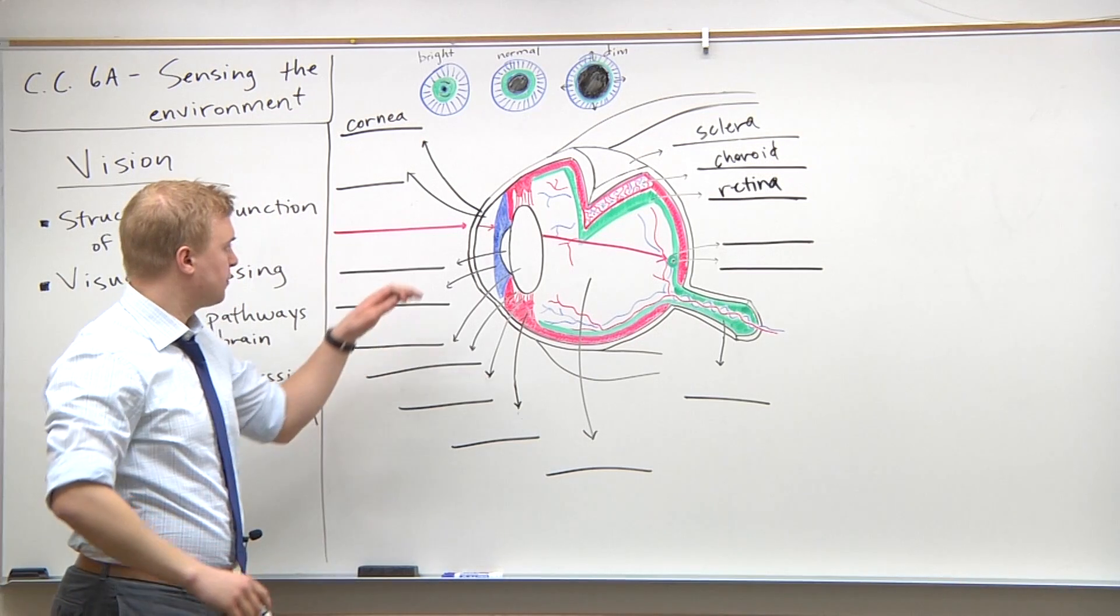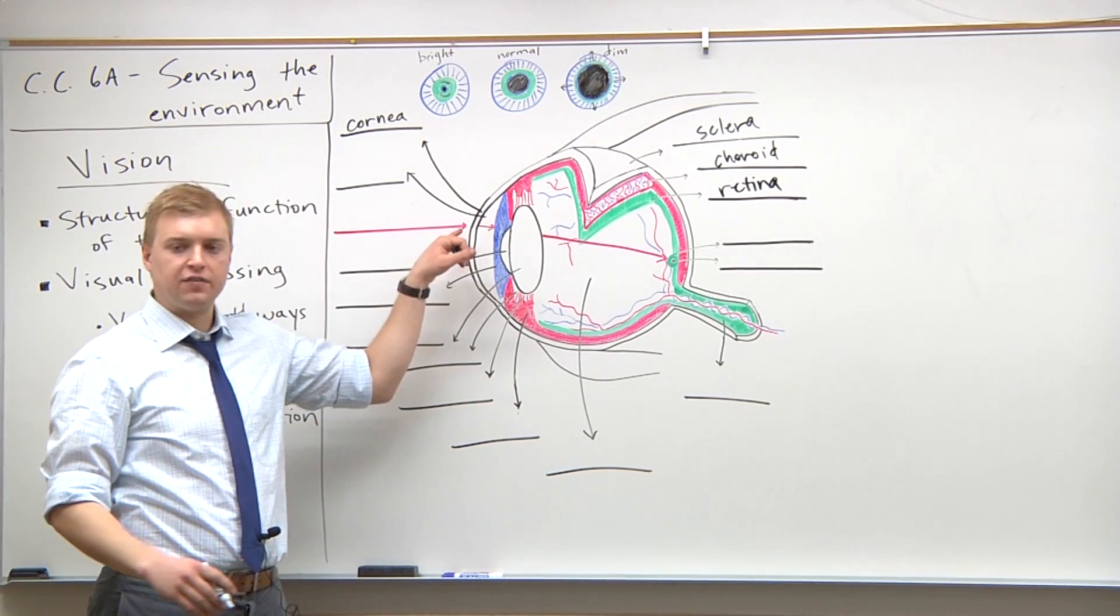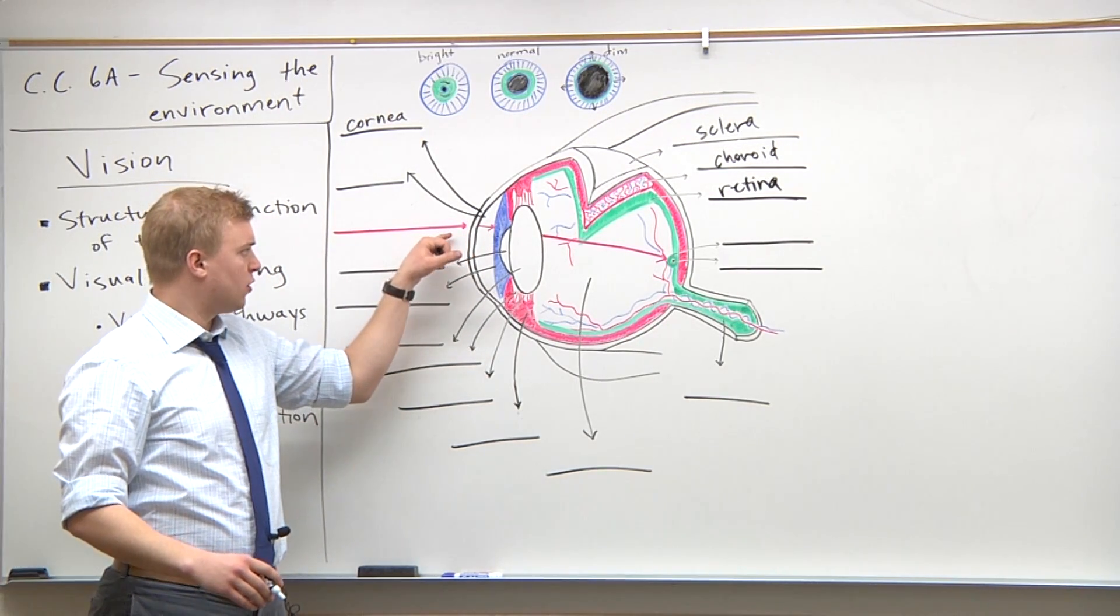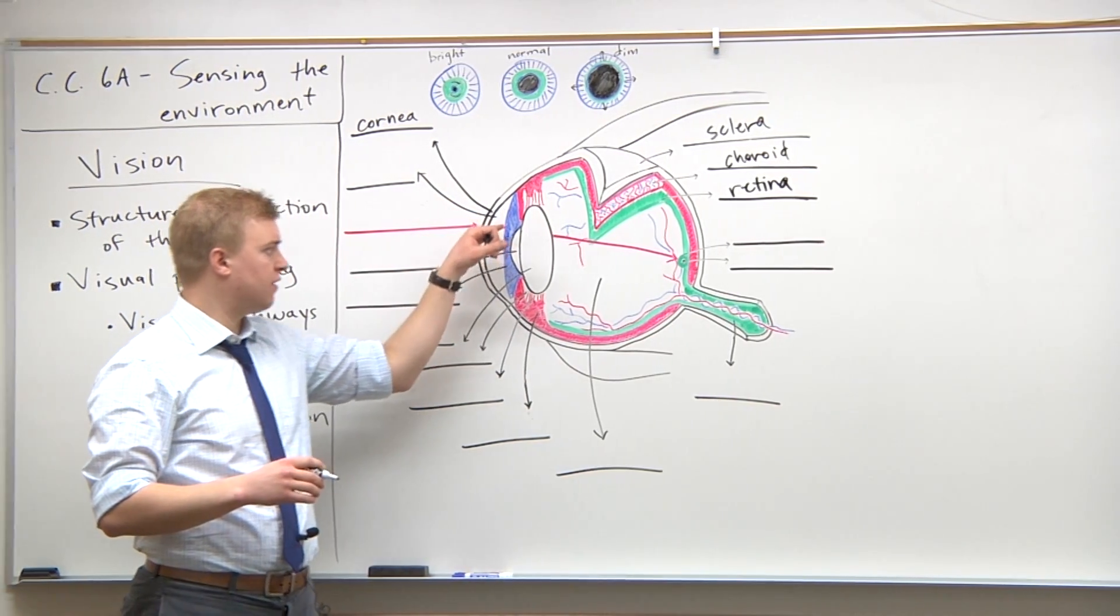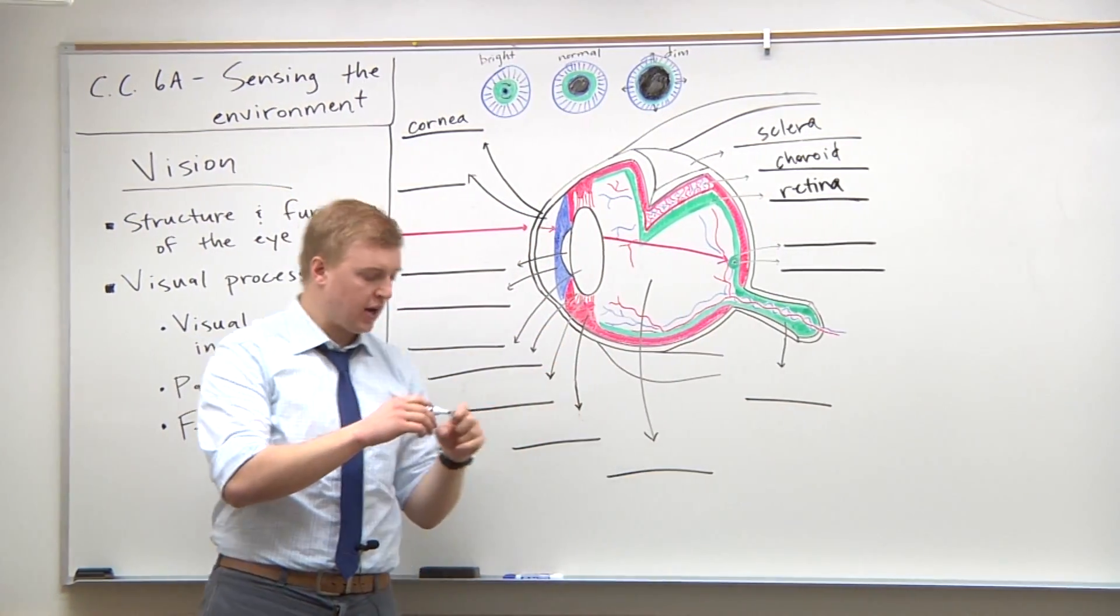The cornea has refractive abilities. As the light ray hits it, the cornea slightly bends that light ray and focuses it toward the back of the eye and the retina.